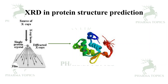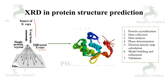Here is the source of X-rays; the rays come in and the protein is made as a film. The single protein crystal's diffracted rays are taken into consideration, documented, and it reveals the three-dimensional structure of the protein. The protein has to be crystallized, data collected, analyzed, phase determined, electron density map calculated, model built and refined, and finally validated.